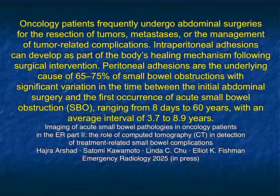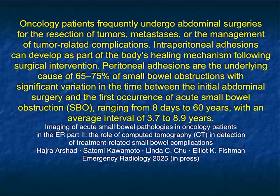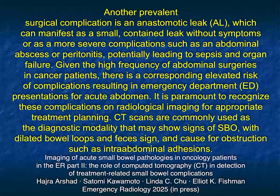Oncology patients undergo abdominal surgeries for resection and management of tumor-related complications. Intraperitoneal adhesions can develop — peritoneal adhesions are the underlying cause of up to 75% of small bowel obstructions, with significant variation in the time between initial surgery and first recurrence of obstruction. We always think of obstruction occurring years after surgery, but it can be as early as a week or so. The average is somewhere between 3.7 and 8.9 years.